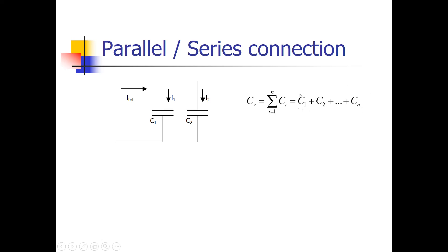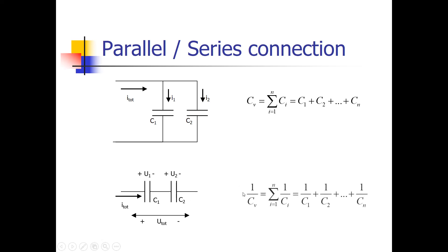When we place capacitors in series, we can calculate the replacement capacitor by: 1 over the replacement capacitor equals the sum of 1 over C1 plus 1 over C2, and so on for each capacitor in series. That is really different when we compare it to resistors in parallel and in series — remember, it's the opposite way of calculating the replacement value.